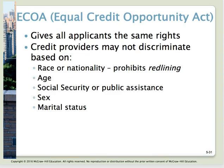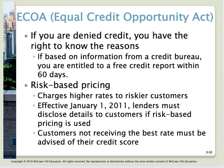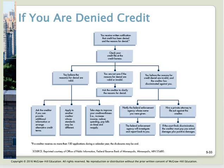The Equal Credit Opportunity Act (ECOA) guarantees that all applicants have the same rights, and that creditors may not discriminate based on age, sex, marital status, receipt of public assistance or Social Security, or race and nationality. This act also provides that you can know the reasons you were denied credit, and you have the right to get a copy of the credit report used to deny you within 60 days — but you do have to request it.